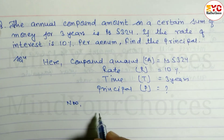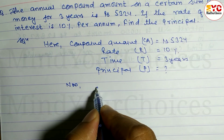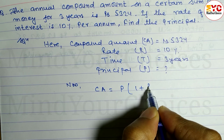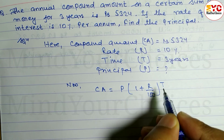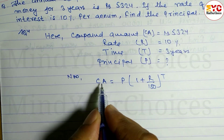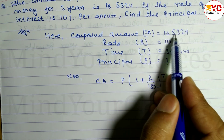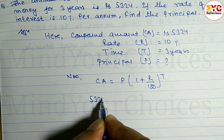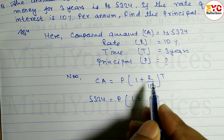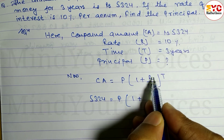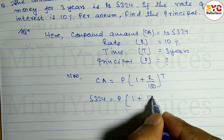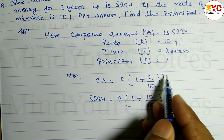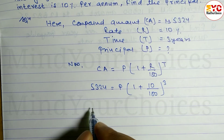Now we know the compound amount formula. CA is equal to P times (1 + r divided by 100) to the power t. Compound amount CA value is 5324, so write: 5324 is equal to P times (1 + 10 divided by 100) to the power 3.